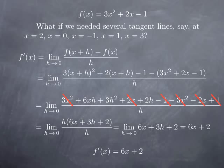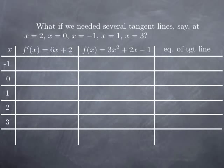Going back to the problem of finding the different tangent lines, we have the values of x we're interested in, a column for f prime, a column for f, and a column for the equation of the tangent line. At x equal to negative 1: f prime is negative 6 plus 2 equals negative 4, and f of negative 1 is 3 minus 2 minus 1 equals 0. So the tangent line at x equals negative 1 is the line of slope negative 4 through the point (negative 1, 0), with equation y equals negative 4 times x plus 1.